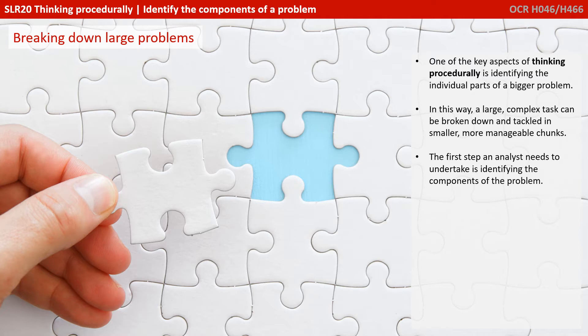One of the key aspects of thinking procedurally is identifying the individual parts of a bigger problem. In this way, a large, complex task can be broken down and tackled in smaller, more manageable chunks. The first step an analyst needs to undertake is identifying the components of the problem.